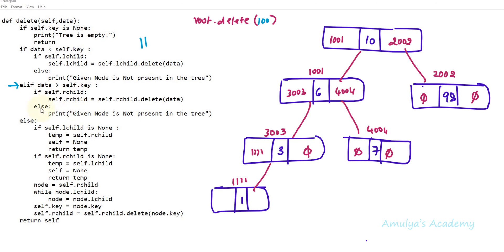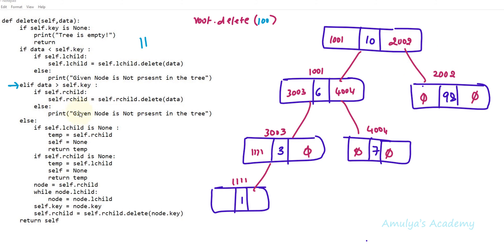After printing that message, it executes return self — returning this node back to its caller. So self.rchild retains its value. There are no other statements, so it executes return self and returns back to the main program. I hope now you understood how this delete method works. If you have any confusion you can ask me in the comment section. That's it for now — thank you for watching, don't forget to subscribe, and I'll meet you in the next class. Take care.